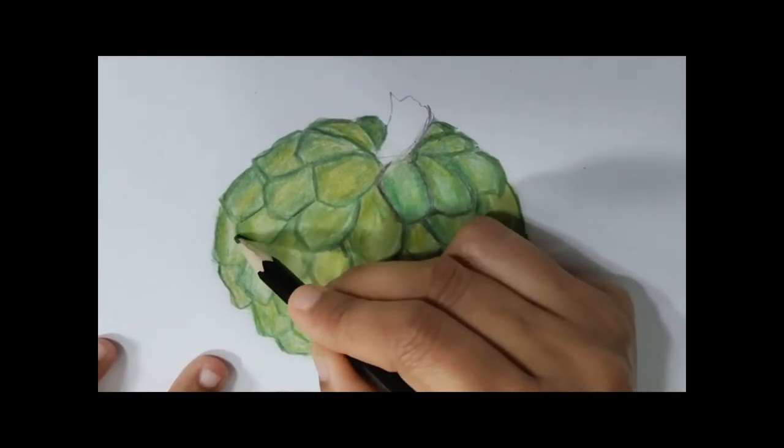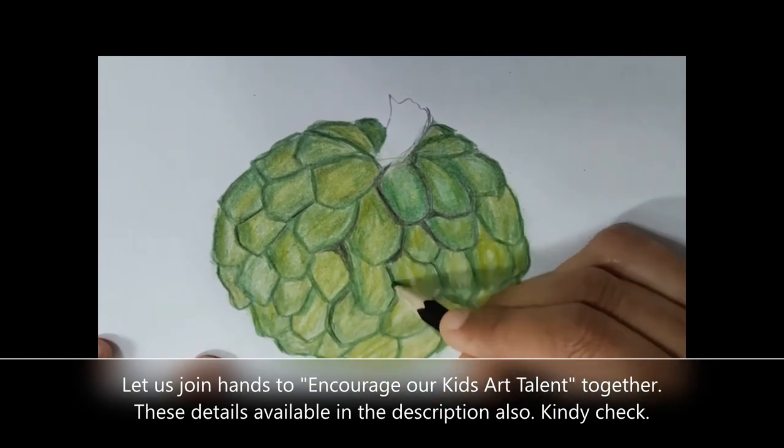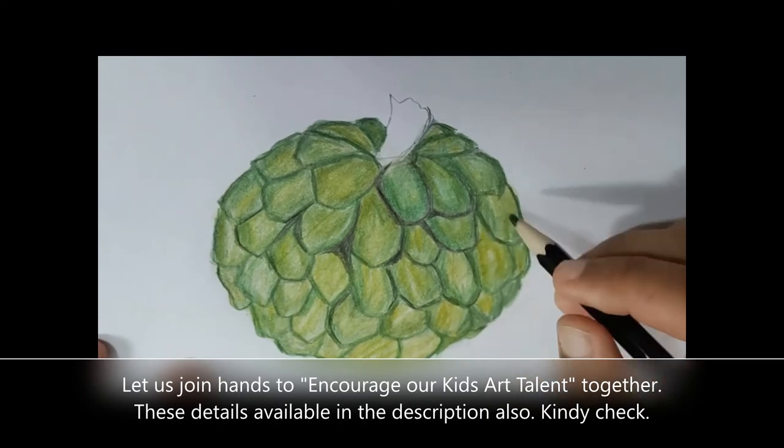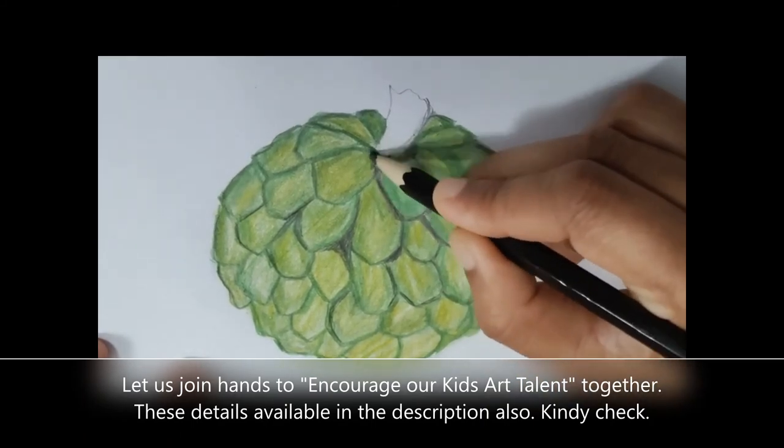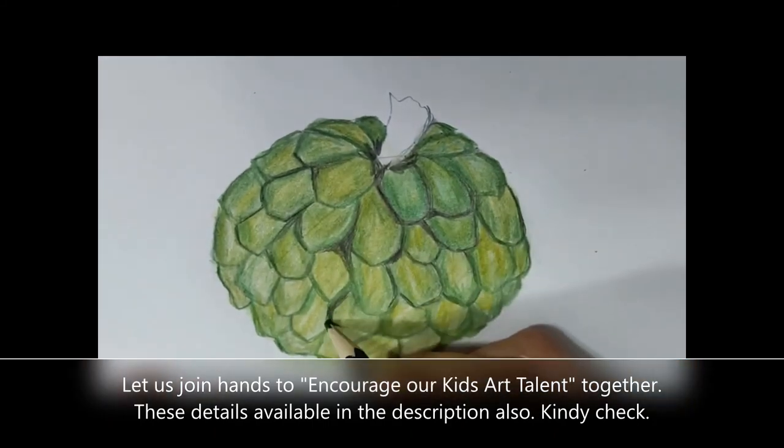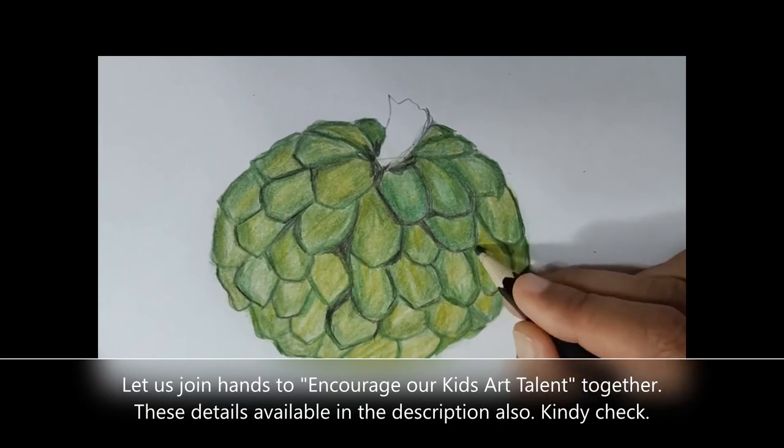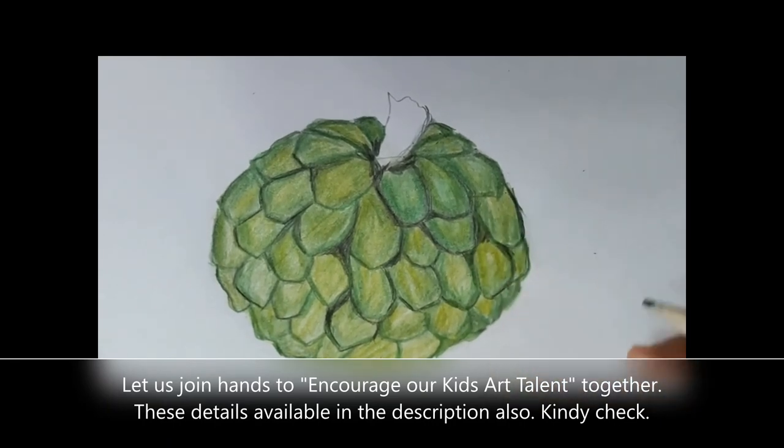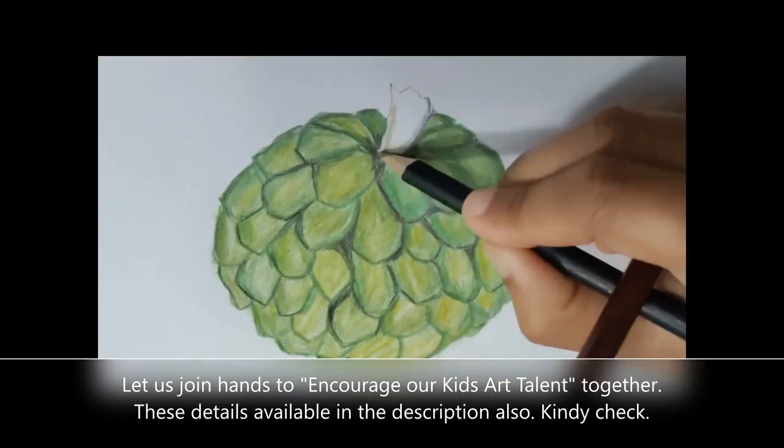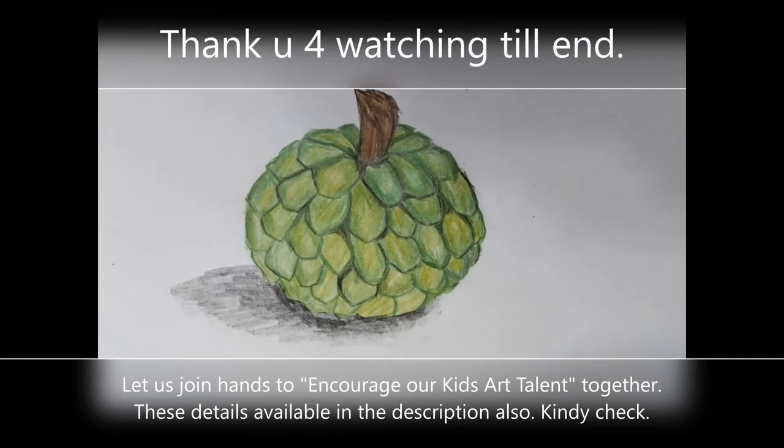Once you are done with your custard apple, you have to do the stem part using brown color, black color, and if you want, you can use red color also and even the shade that you can find in my image at the bottom of the custard apple. That also you have to do by your own and send me your artwork. You can see those in my next videos.